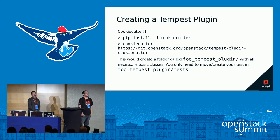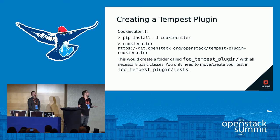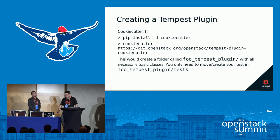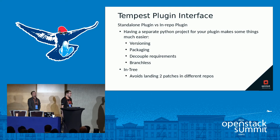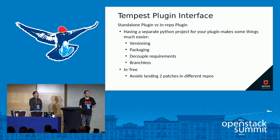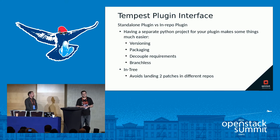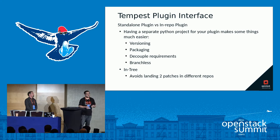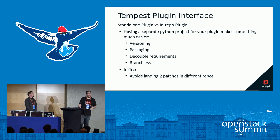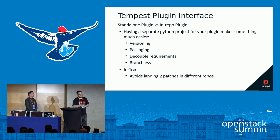If you want to create a plugin from scratch, you could either code it yourself or use cookie cutter. Cookie cutter is basically a templating system — you just install it and use that repo, and it creates a scaffold for all your plugin needs. We could either choose to have our plugin in-tree, meaning it shares the same repo as the project — Neutron implements this way — or as a dedicated repo, which is the recommended approach.